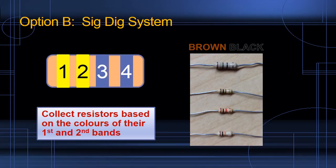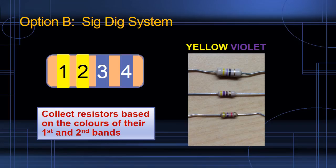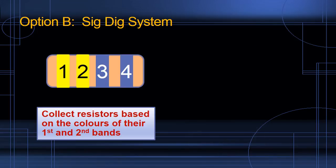So we'll collect brown and blacks together and put them in a bin labelled 10. We will collect yellow-violet together in a bin labelled 47. And we want to make sure that we have enough bins to cover the common 5% resistors, some of which are shown here.